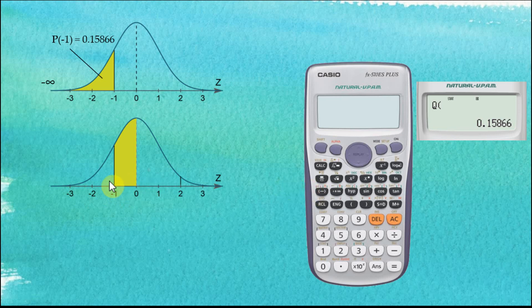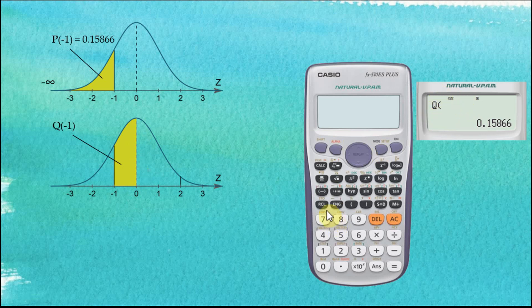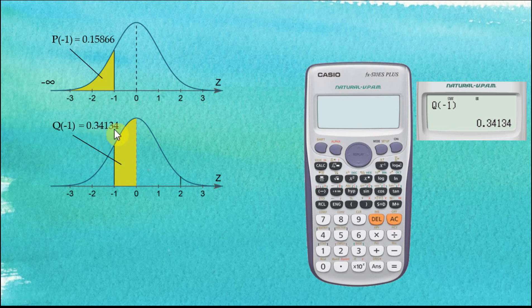We would like to find the area from negative 1 to 0, so what we need to find is Q(−1). We key in negative 1, close bracket, equal. The area from negative 1 to 0 is 0.34134.